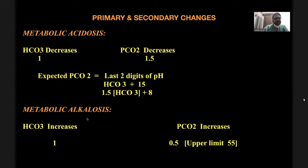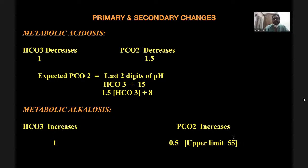During metabolic alkalosis, bicarbonate increases and PCO2 also increases. For each one increase in bicarb, PCO2 increases by 0.5. An important caveat is that because you keep on hypoventilating during metabolic alkalosis, there is a limit: PCO2 cannot rise above 55. When becoming alkalotic, the PCO2 stops at 55 because at that point hypoxia sets in. This is a safety mechanism in the body.